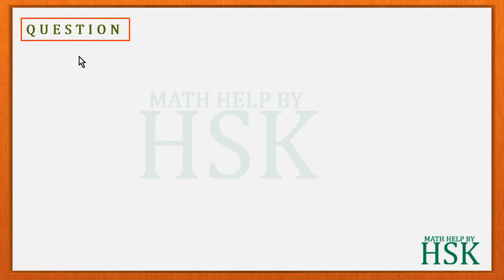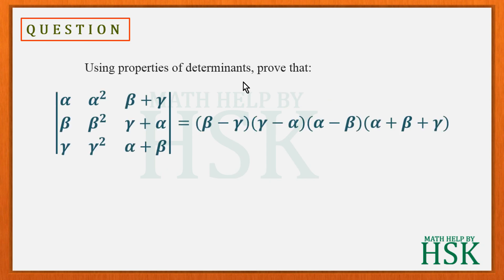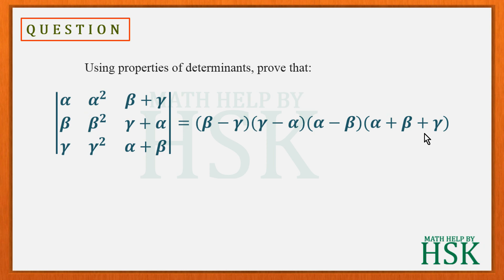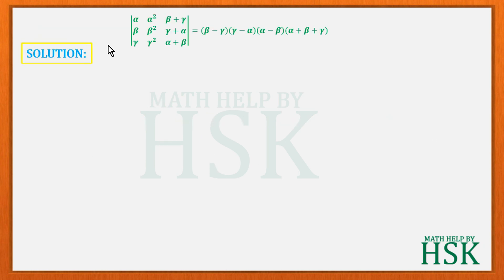The question is: using properties of determinants, prove that the determinant with rows (α, α², β+γ), (β, β², γ+α), (γ, γ², α+β) is equal to (β−γ)(γ−α)(α−β)(α+β+γ).